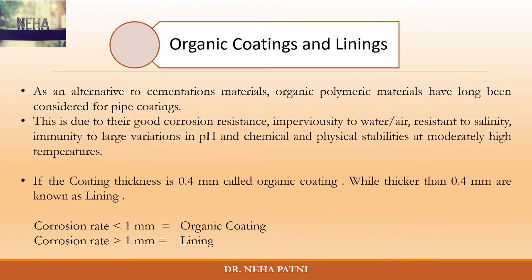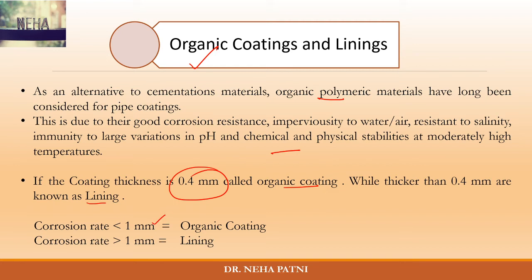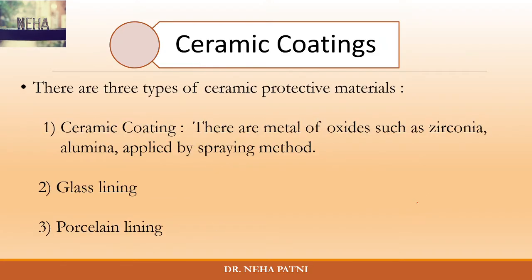Organic coatings and linings use organic polymers as an alternative coating material. They provide good resistance to corrosion, water, and variations in pH, and are stable with respect to the chemical and physical environment. The distinction between a coating and a lining depends on thickness: if the thickness is less than 0.4 mm it is called a coating, and if it is greater than that it is called a lining.